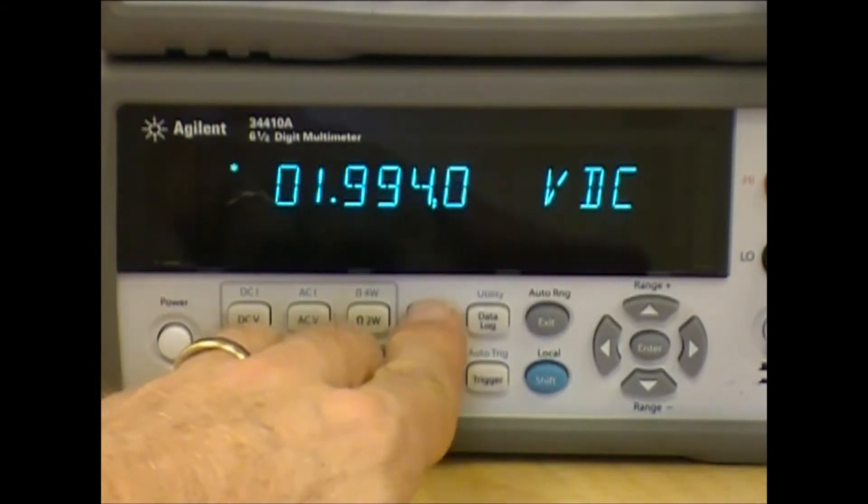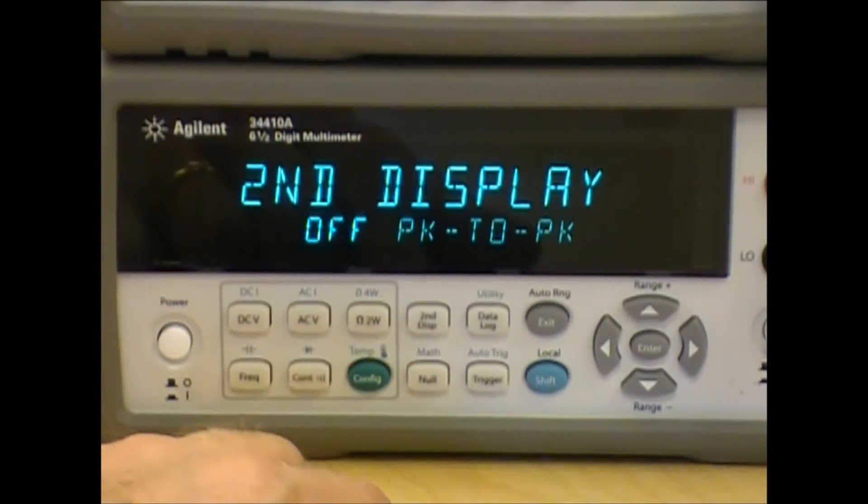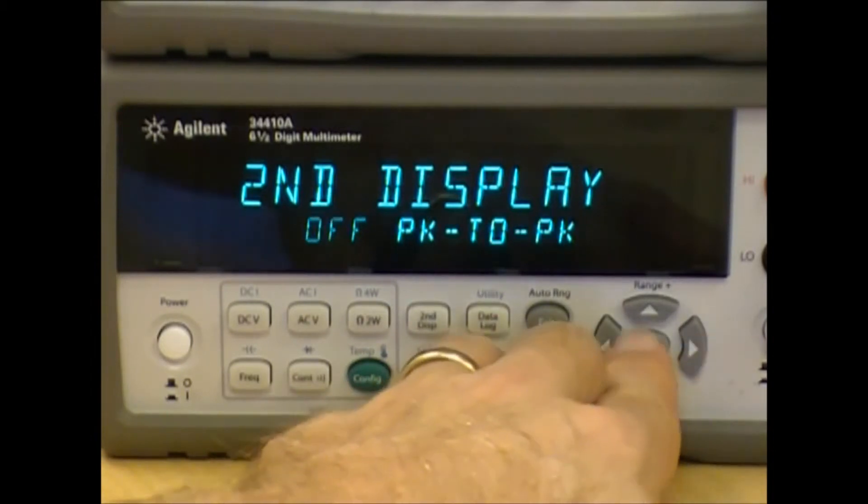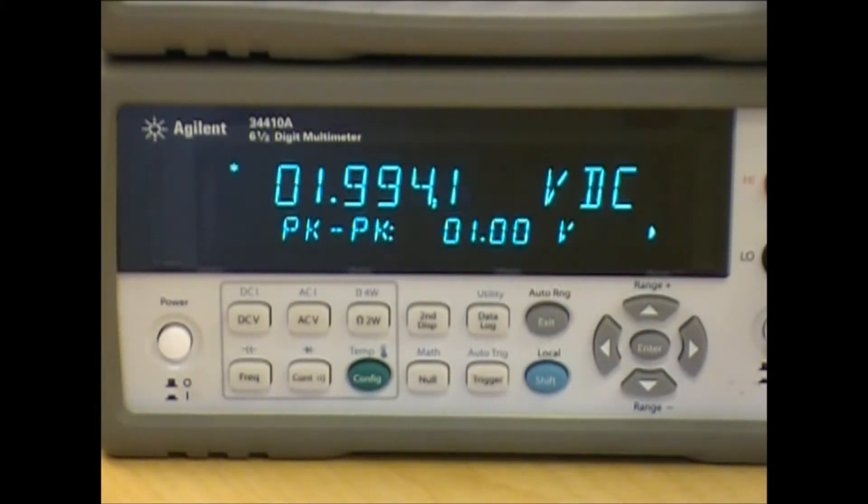With the second display capability of the 34410A, we can take a look at that peak to peak signal. And sure enough, there it is. We have again approximately 2 volt DC signal with a 1 volt peak to peak AC signal riding on top of it.